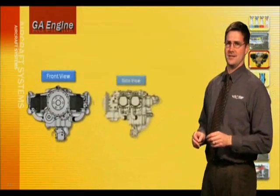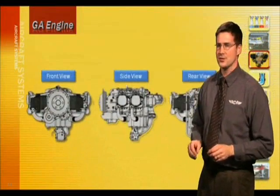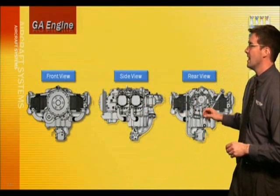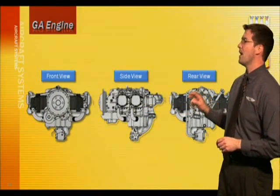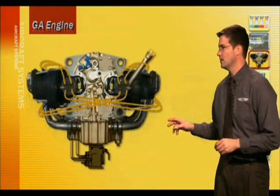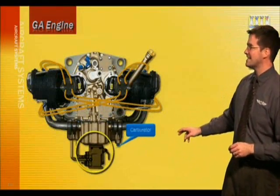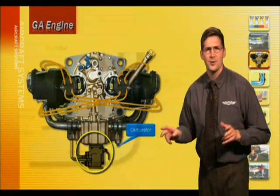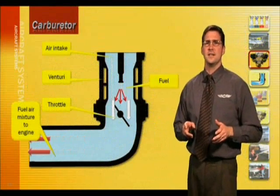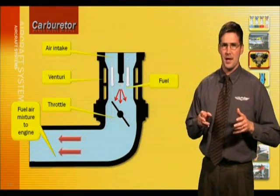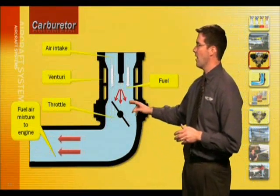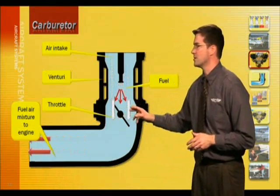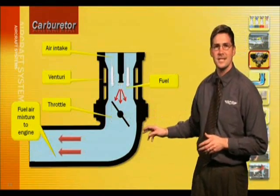Here are some views of a typical engine you'll see in a general aviation aircraft. At the engine bottom is the carburetor. Looking inside the carburetor, notice the unusual carburetor components: the air intake, the fuel supply entering the carburetor, and the throttle valve. From this point the air-fuel mixture travels to the engine.